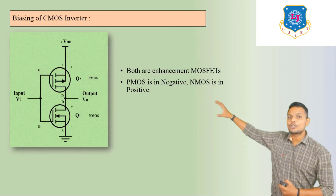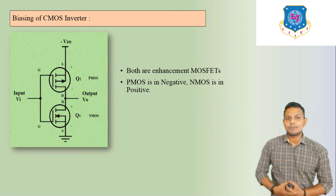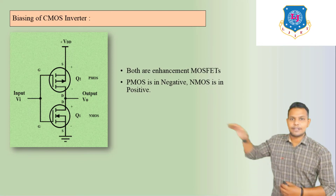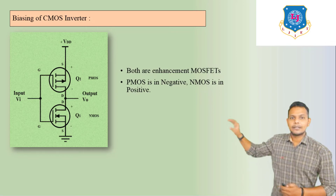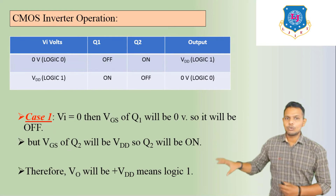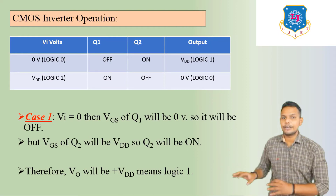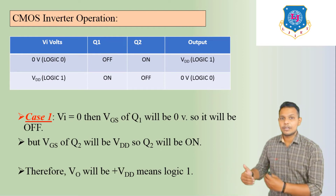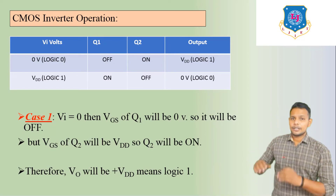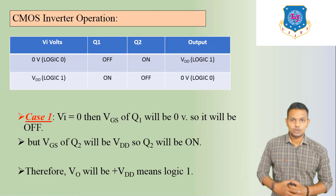But VGS of Q2 (PMOS) is due to VDD, because VDD is +5 volts in analog terms, so there is a voltage present. That means Q2 will be ON, therefore VO = +VDD. In digital terms, this means logic 1. So if you enter logic 0 at the input, you will get logic 1 at the output. This is Case 1.